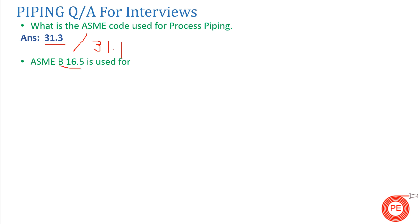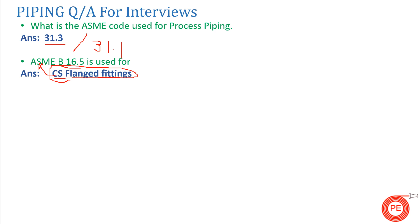Next question: what is ASME B16.5 used for? ASME B16.5 is the standard for carbon steel and cast steel flanged fittings and couplings. It is a dimensional standard — it tells us the OD of the flange, the thickness, the number of bolts, and the different pressure ratings. If you have cast steel flanges, you refer to ASME B16.5.